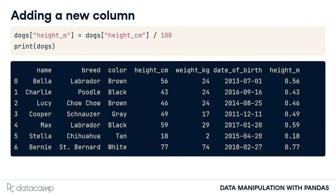Let's say we want to add a new column to our data frame that has each dog's height in meters instead of centimeters. On the left-hand side of the equals, we use square brackets with the name of the new column we want to create. On the right-hand side, we have the calculation. Notice that both the existing column and the new column we just created are in the data frame.